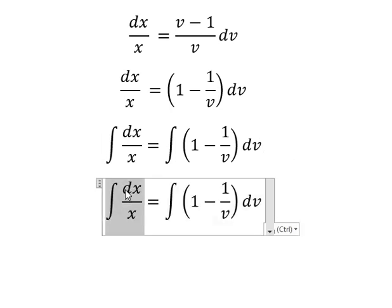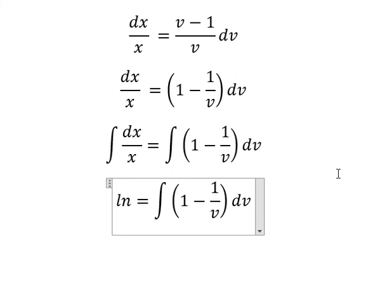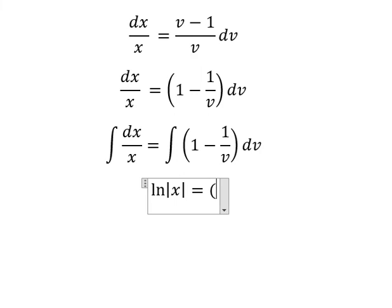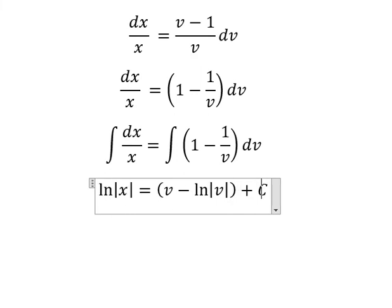So the integration of this one, we have ln of the absolute value of x. The integration of 1 we have v. The next one we have ln of the absolute value of v, and I will put C here.